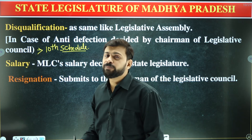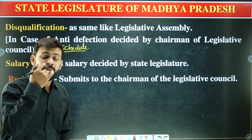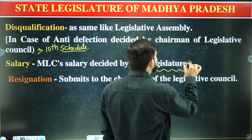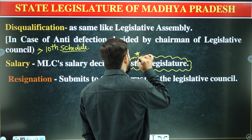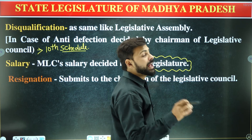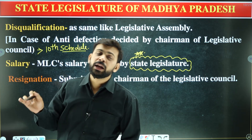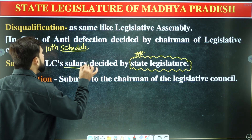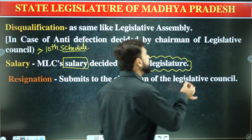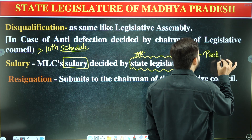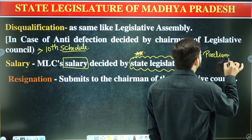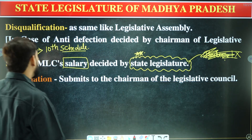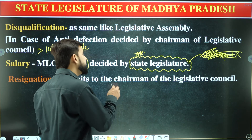The anti-defection law is mentioned in the 10th Schedule. Under it, the Chairman can remove a member. The salary of members of the legislative council is decided by the state legislature — if an exam question says Parliament, President, or Governor decides salary, that would be incorrect.